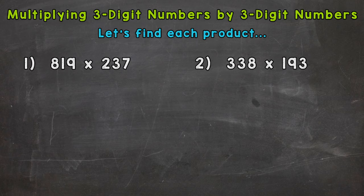The first thing we need to do is line this problem up: 819 times 237. Make sure you line up all your places so the nine and seven are in the ones place, the one and three are in the tens, and the eight and two are in the hundreds. Now we're ready to multiply.